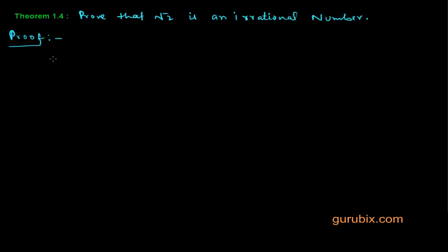Here is a very important theorem. The statement of the theorem says: prove that √2 is an irrational number.